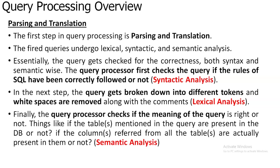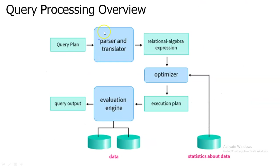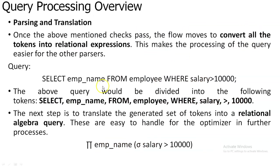After the parser completes its work, the translation part converts the query into a relational algebra expression. For example, the query 'SELECT employee_name FROM employee WHERE salary > 10000' is first processed by the parser — rules are checked, white spaces are removed, and each word is converted to tokens: SELECT, employee_name, FROM, employee, salary, the greater-than symbol, and 10000 are all individual tokens. Then the meaning is checked — whether the employee table and salary column exist in the database.